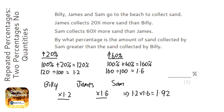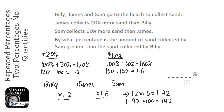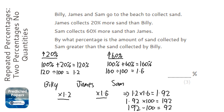Now 1.92 is the multiplier, but we need to work backwards to find what percentage increase it represents. To work backwards, you do the opposite — multiply by 100, giving 192. Then instead of adding 100%, we take it away: 192 minus 100 equals 92%. So it's actually an increase of 92%, not 80%.